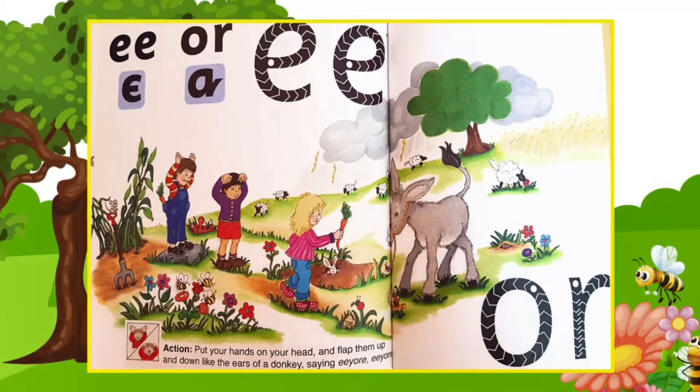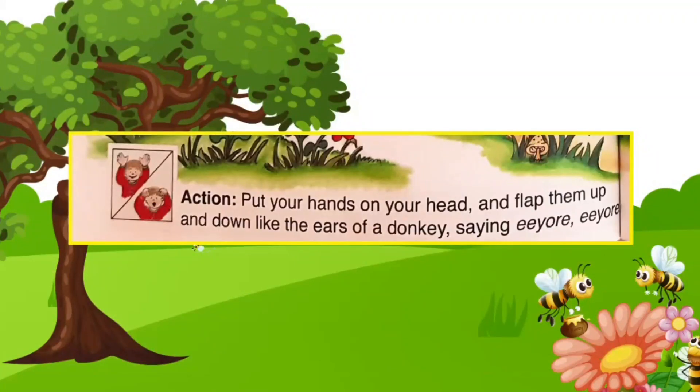Now if you want to do the action for this sound, you need to put your hands on your head and flap them up and down like the ears of a donkey, saying E-O, E-O, E-O. Look at this.